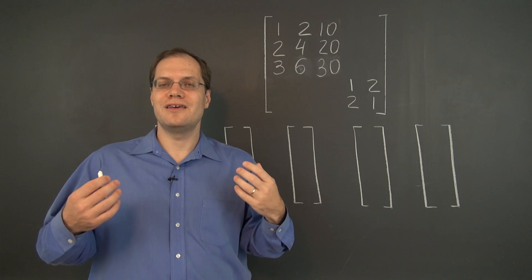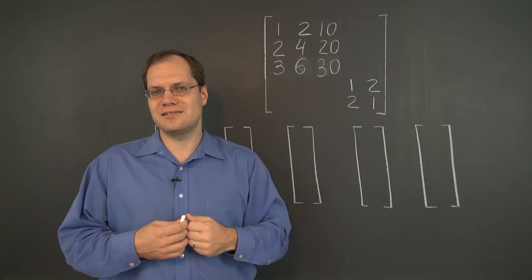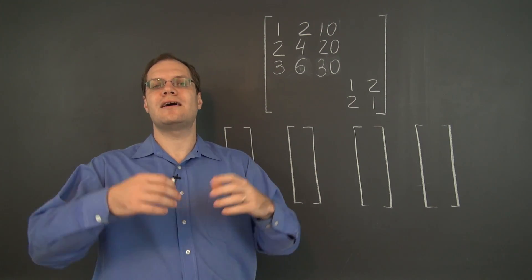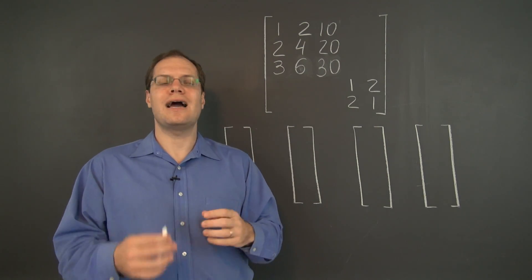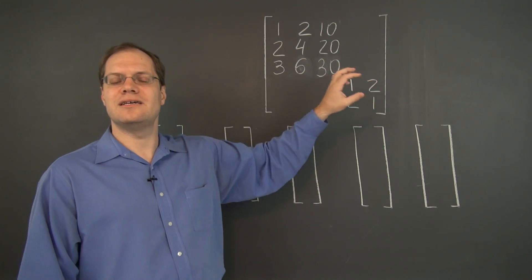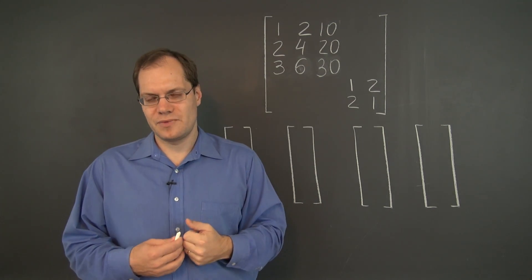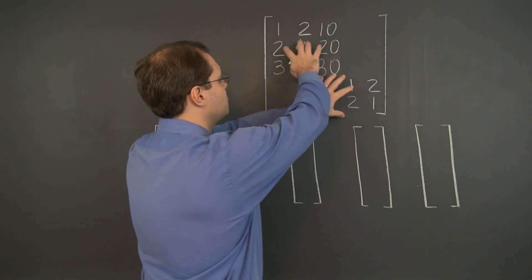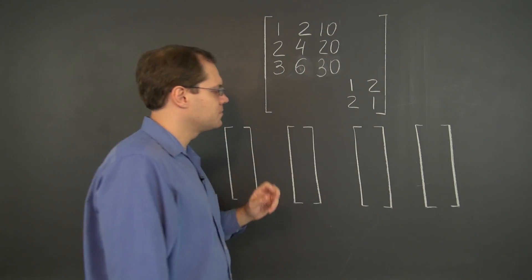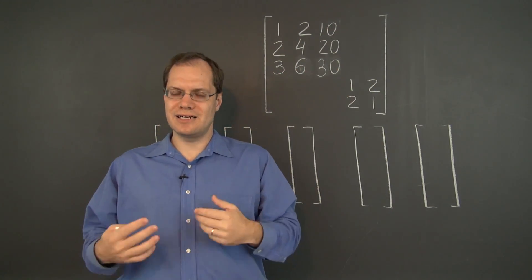So why are block matrices easy or good to analyze in some way? Well that's because we can analyze a larger structure by analyzing its smaller parts individually. There's this very nice decoupling going on. And that wouldn't be the case if these were arranged differently. So here's what I mean by decoupling.